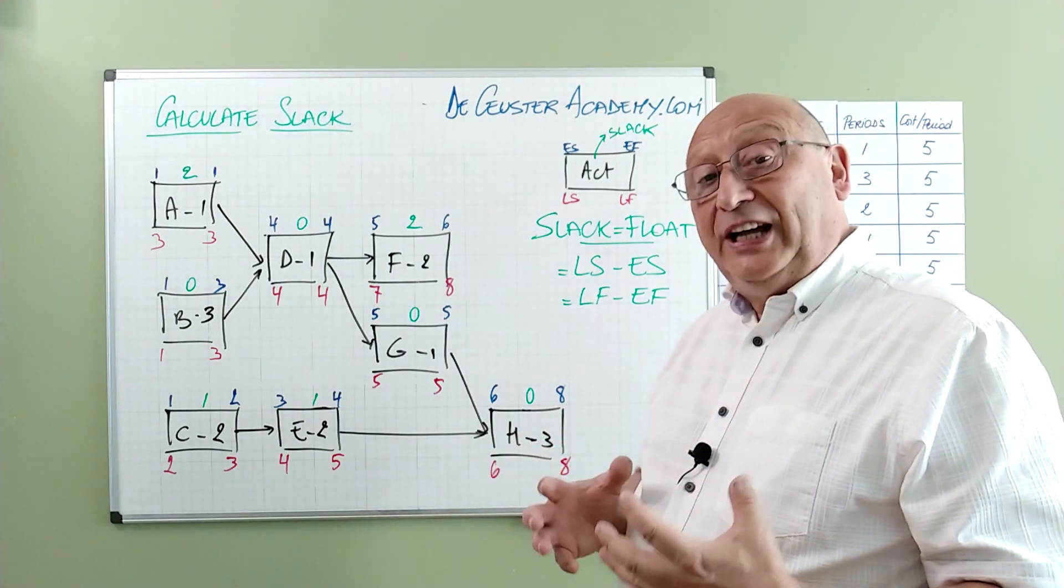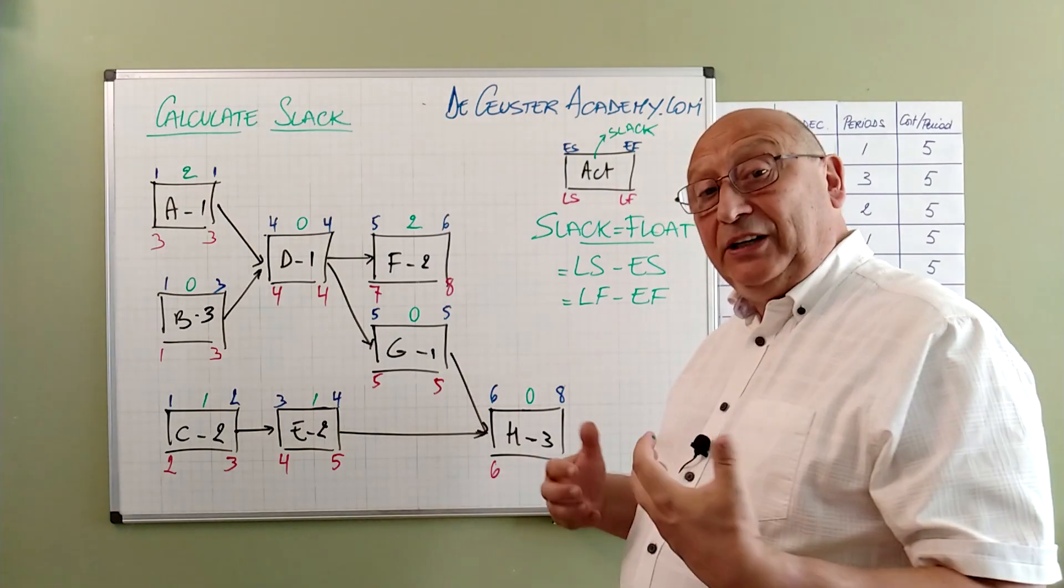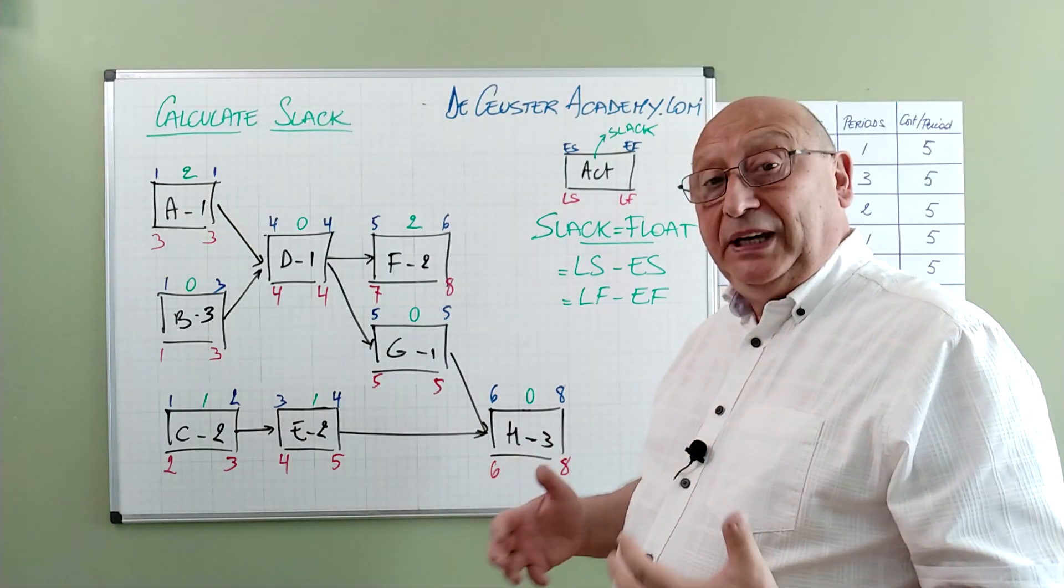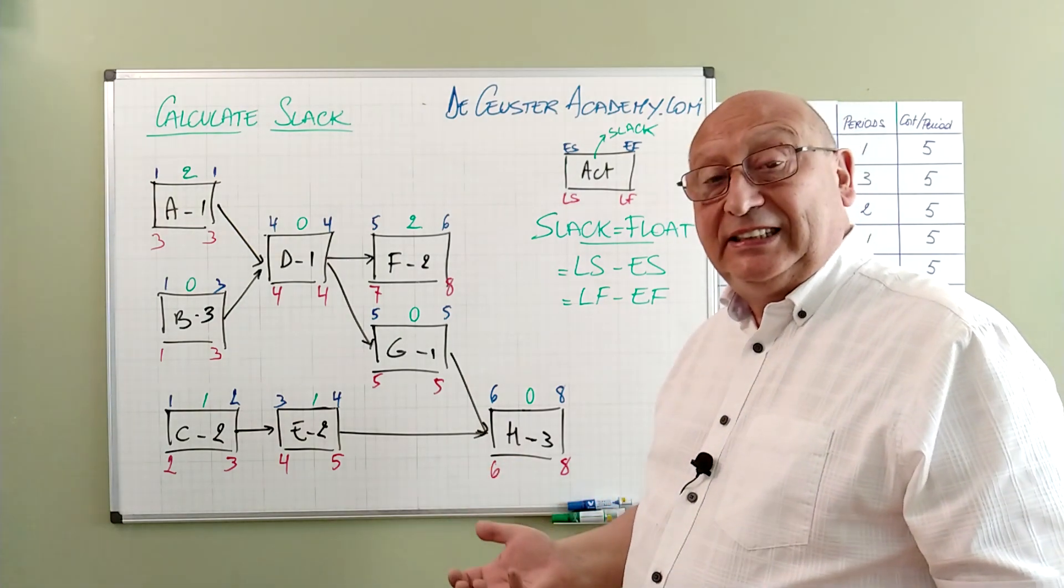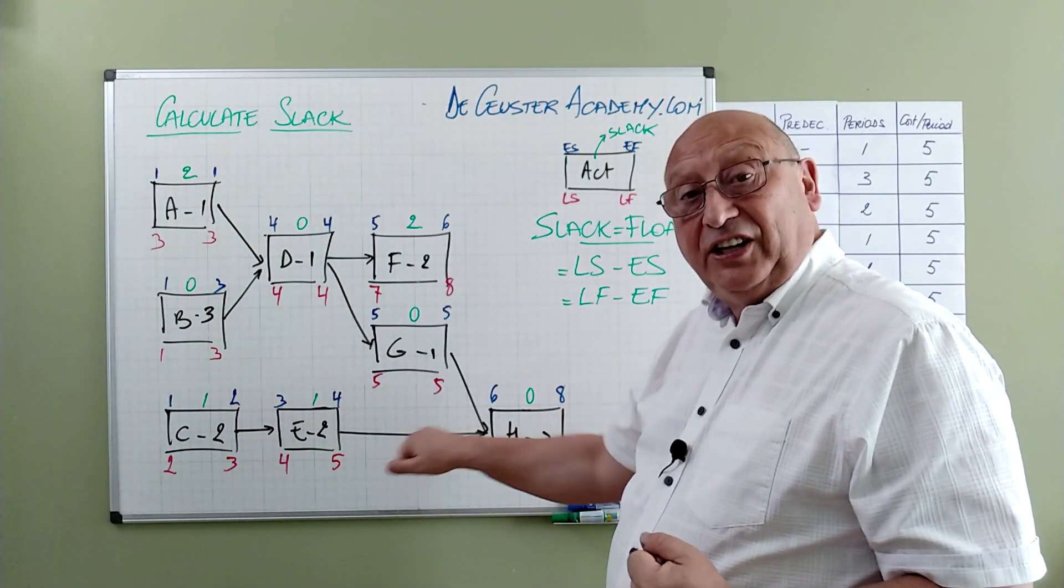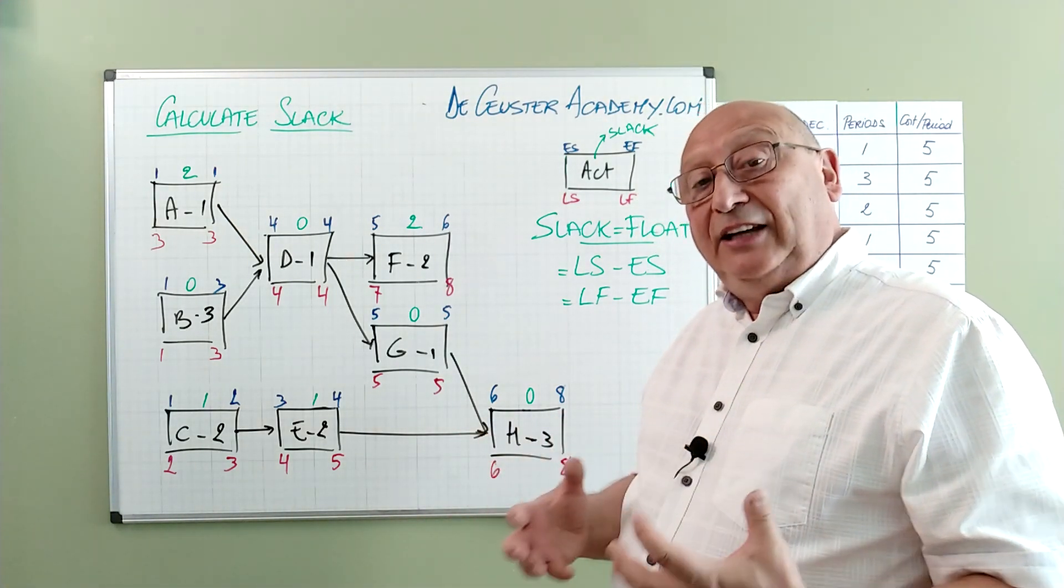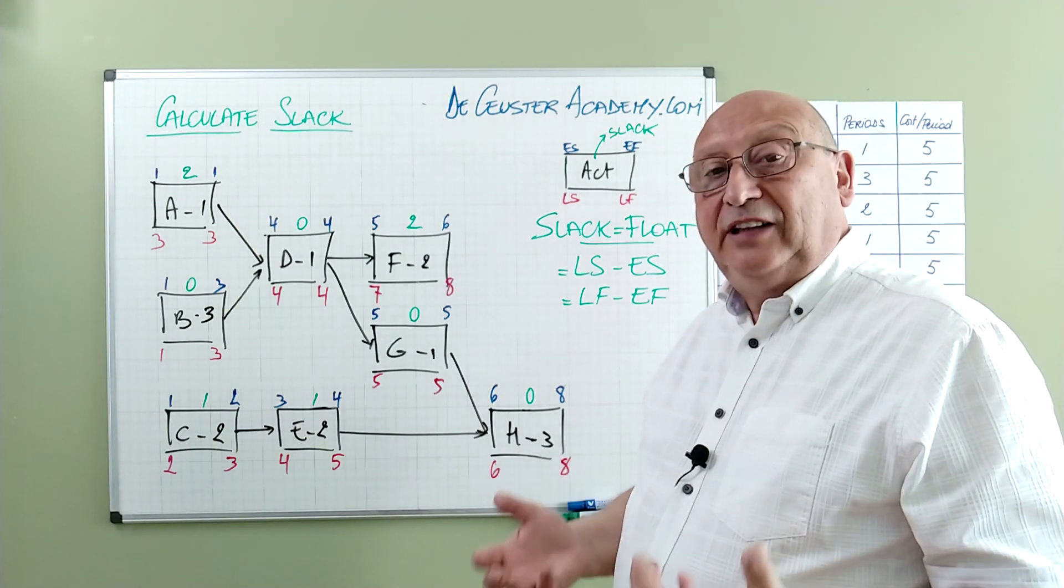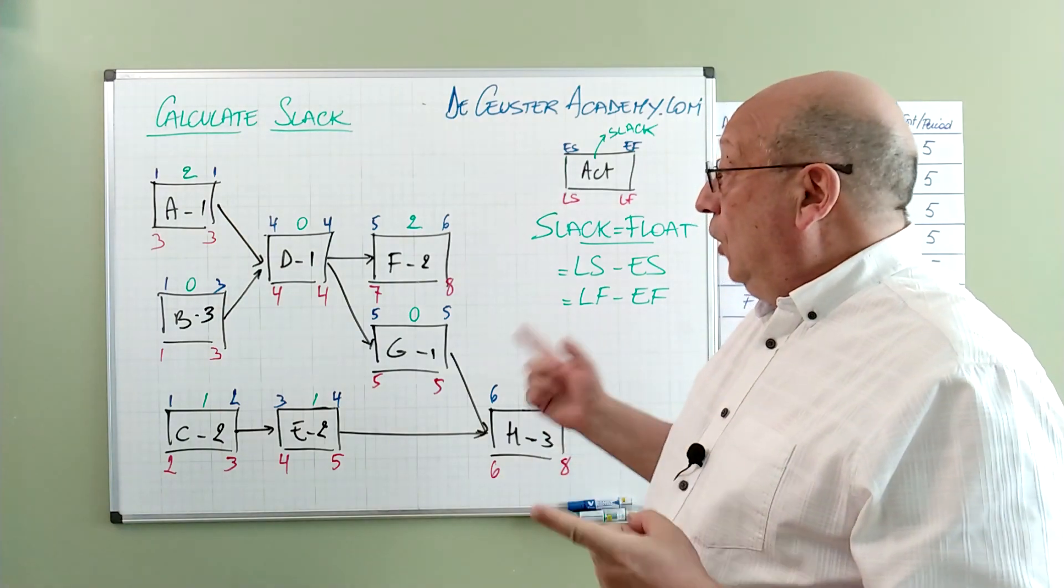The same thing is when the duration is shorter. For example when activity H will be done faster or will be managed to do it in two periods instead of three. We will see that we get a second critical path and the project duration will be reduced. Activities on the critical path will have a direct impact on the duration of the project.